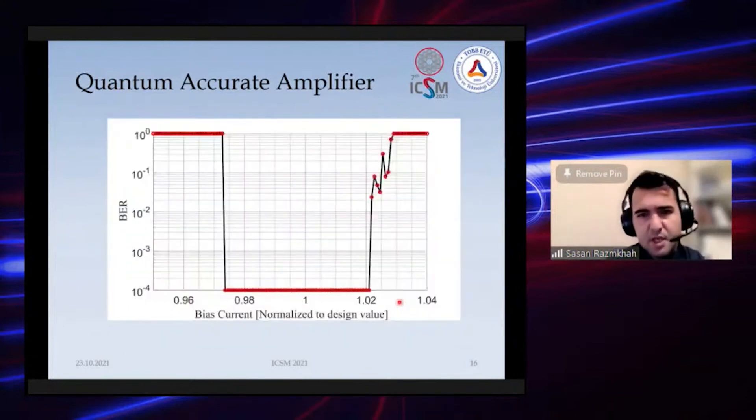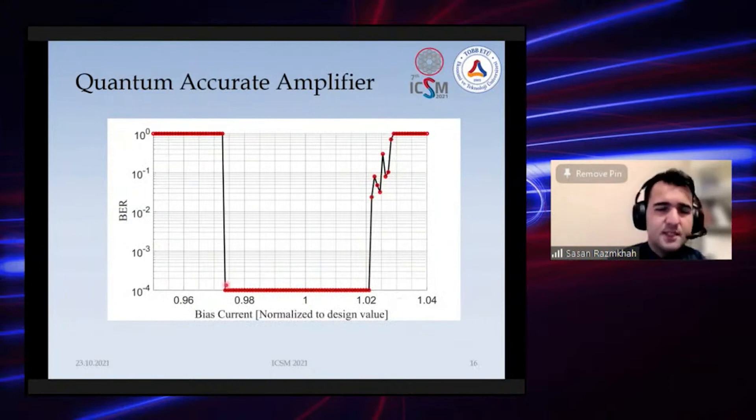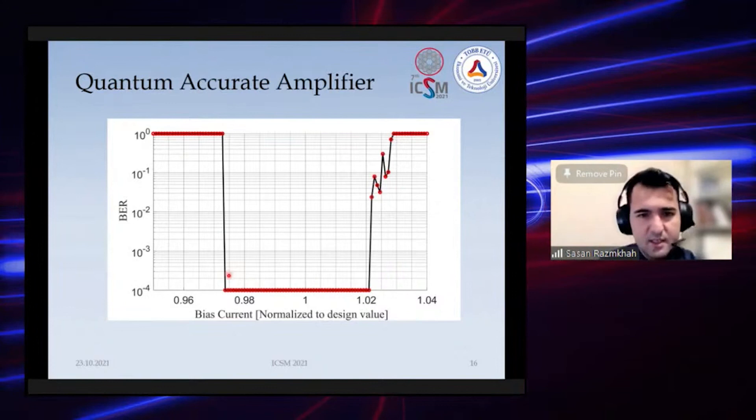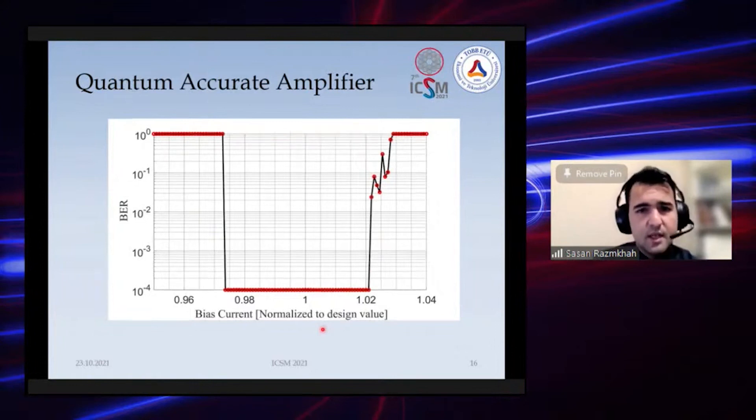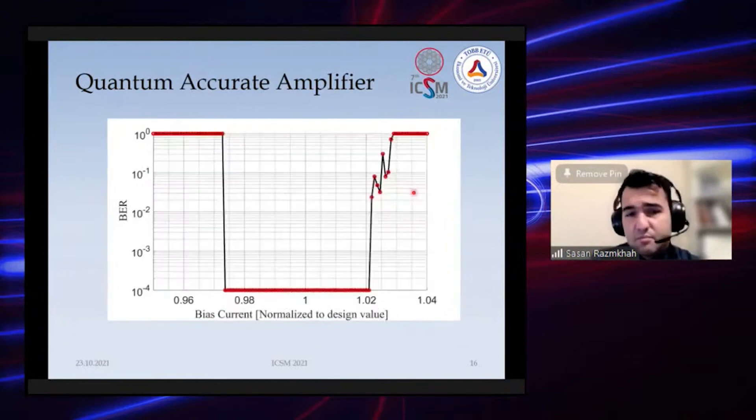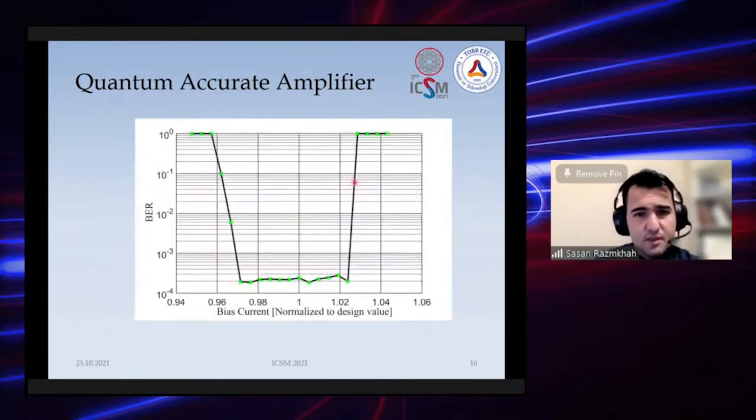Since the bias is independent and we apply it analogically—it's not dependent on anything—we can give a very precise bias. As you can see in simulations we have about plus-minus 2% of the margin on this bias. This is the measurement of the same bias—we even get some better results in the measurements, so we have about plus-minus 2.5% margin.